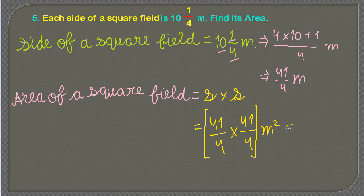OK, now after when you multiply we get 4 into 4 as 16, units would be meter square. Now to figure out 41 into 41...